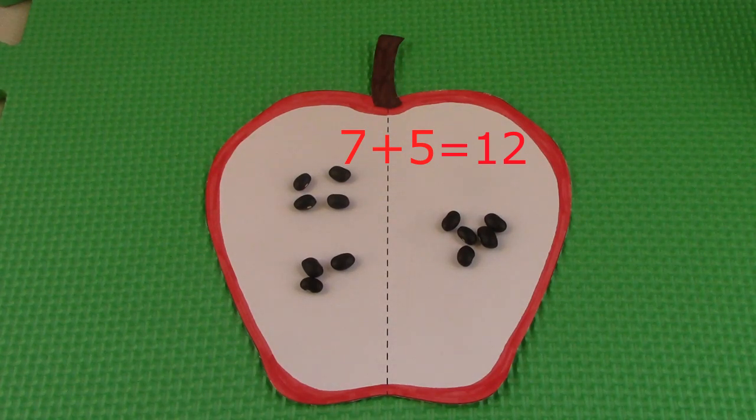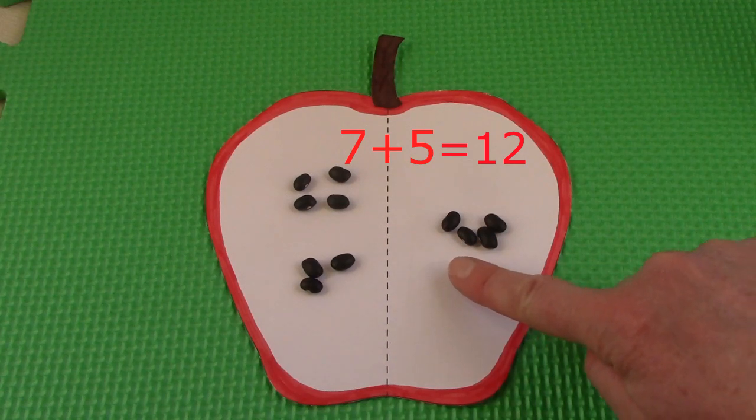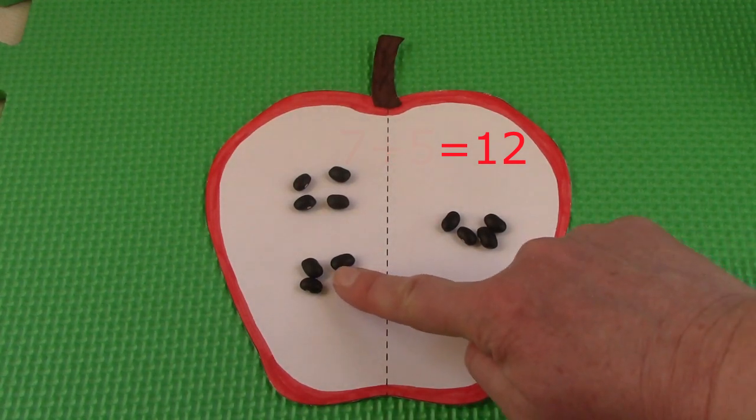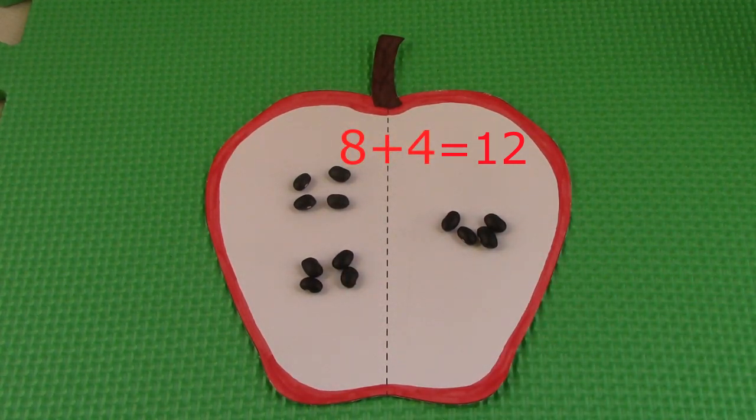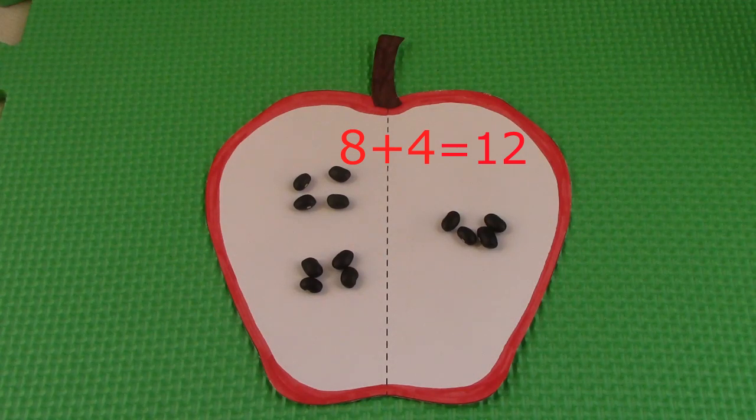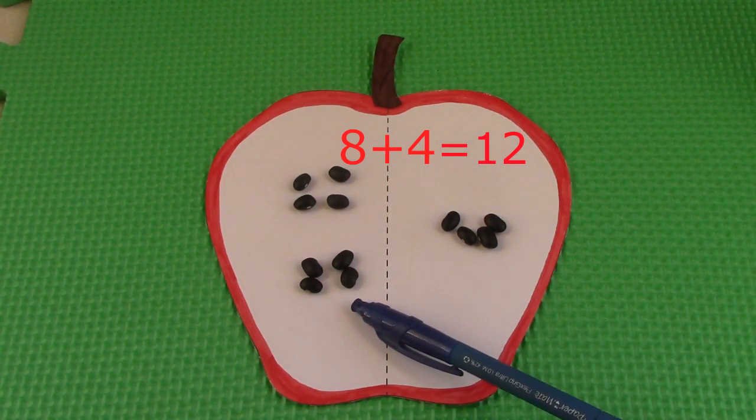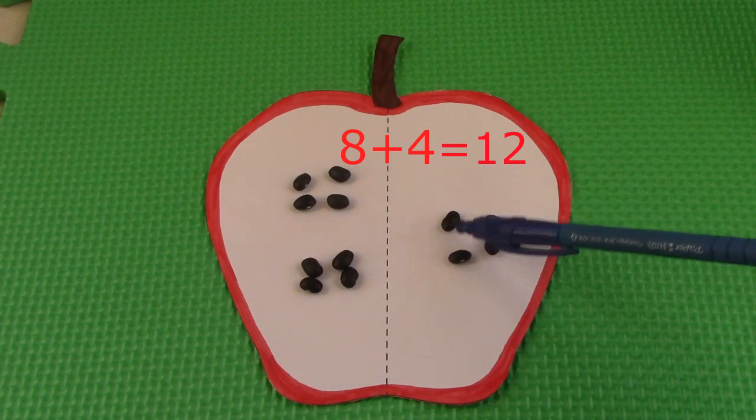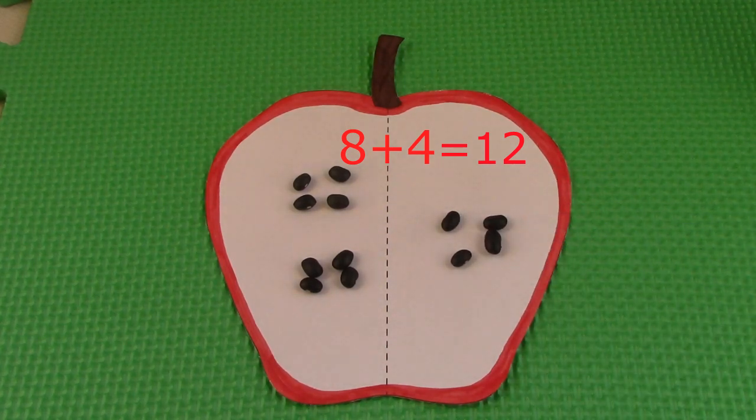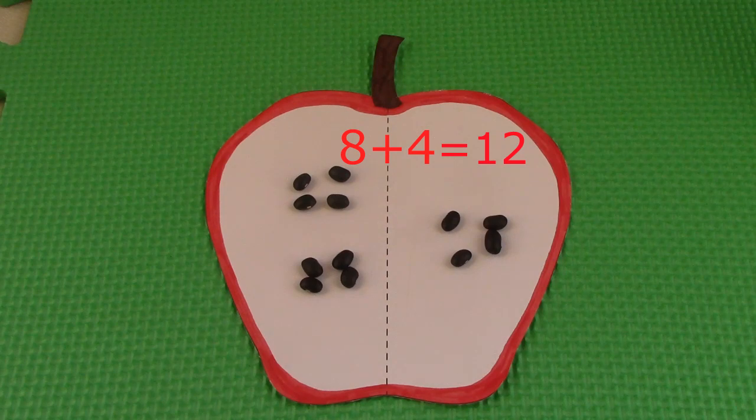Oh, I know something else that is 12. If we take 1 of these seeds and put it over here so that we have 8 plus 4, that's also going to be 12. The number of seeds didn't change. We just put them on different sides. We have 8 and then let's add on to it. 9, 10, 11, 12. 8 plus 4 is 12.